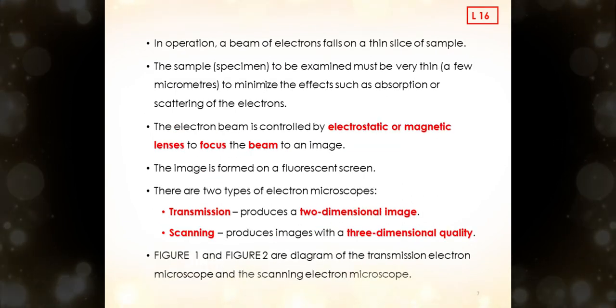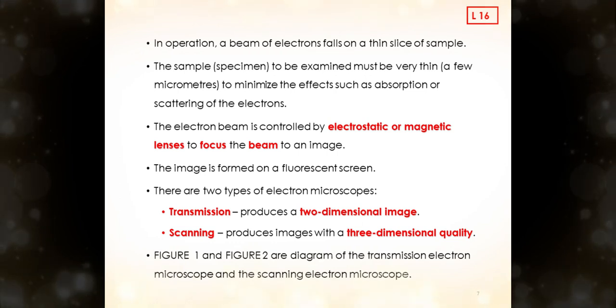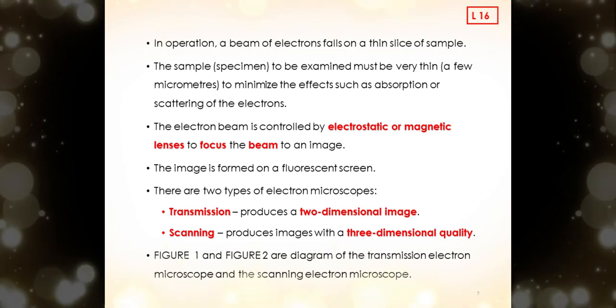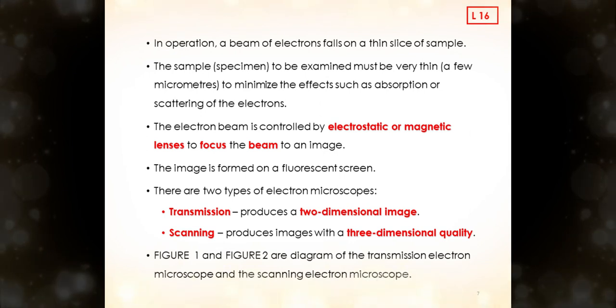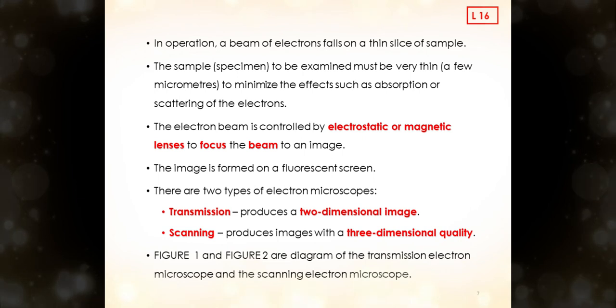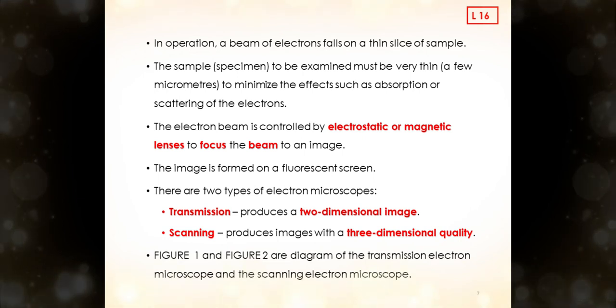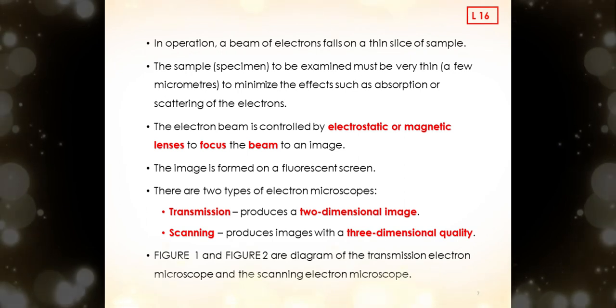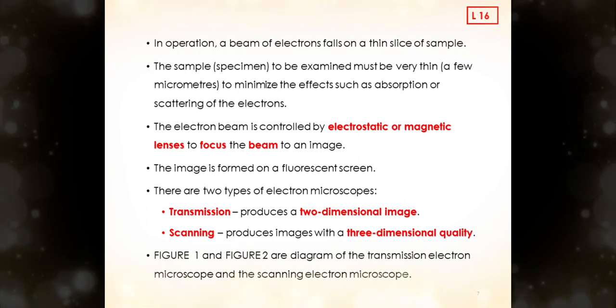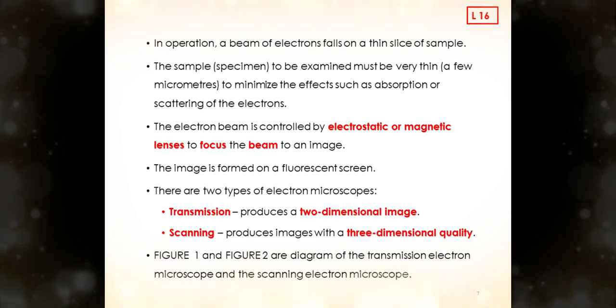In operation, a beam of electrons falls on a thin slice of sample. The sample or specimen to be examined must be very thin, a few micrometers, to minimize the effects such as absorption or scattering of the electrons. The electron beam is controlled by electrostatic or magnetic lenses to focus the beam to an image. The image is formed on a fluorescent screen.